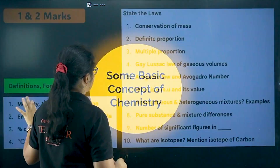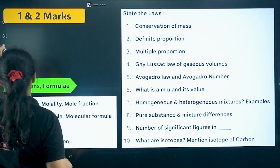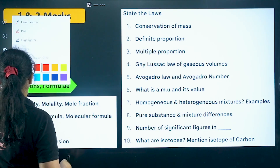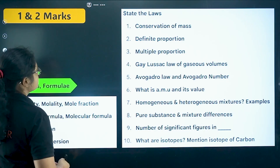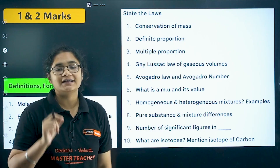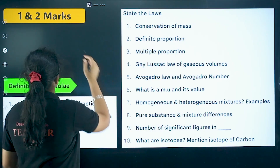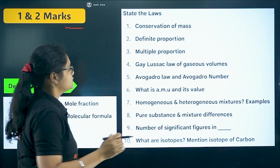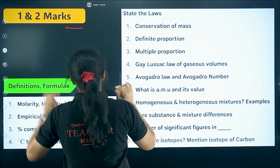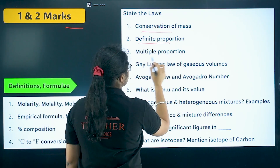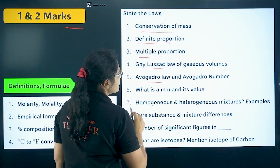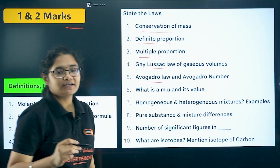Let's get started with the first chapter: Some Basic Concepts of Chemistry. For this chapter, you need to remember all the laws — these laws can be asked in the one or two marker section. So for example: conservation of mass, definite proportion, multiple proportion, Gay-Lussac's law, and Avogadro's law. All these laws with their definitions you have to remember.